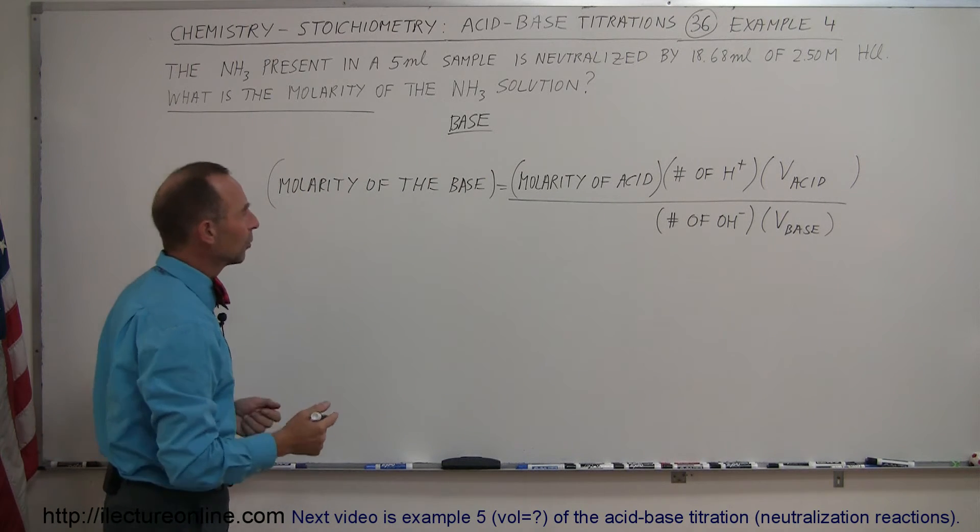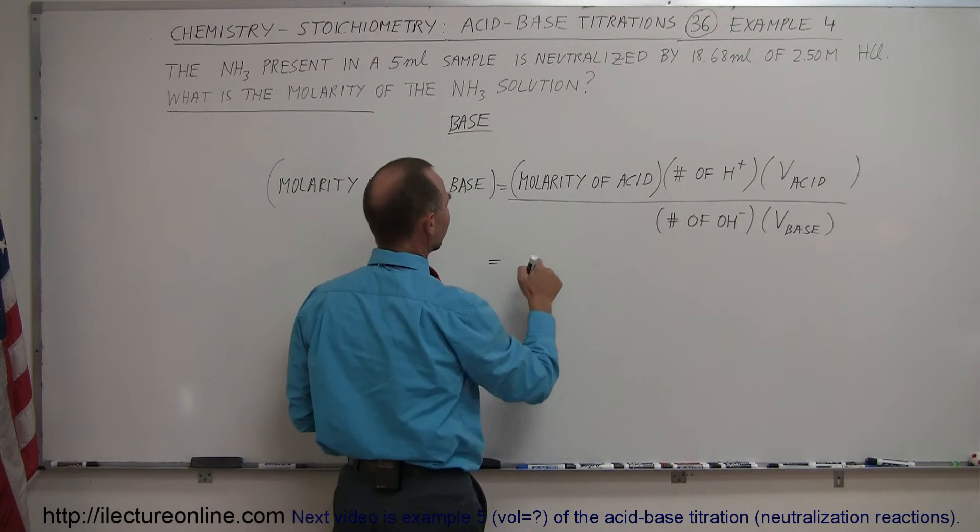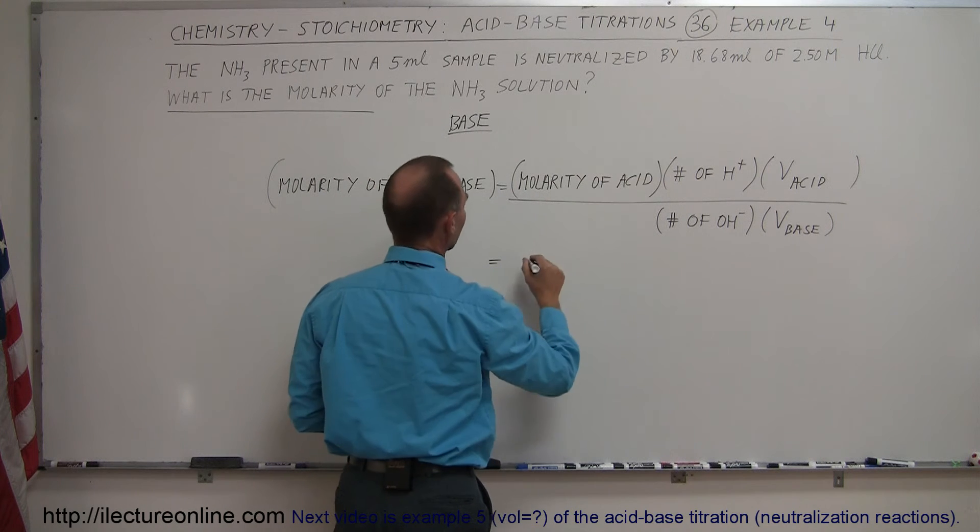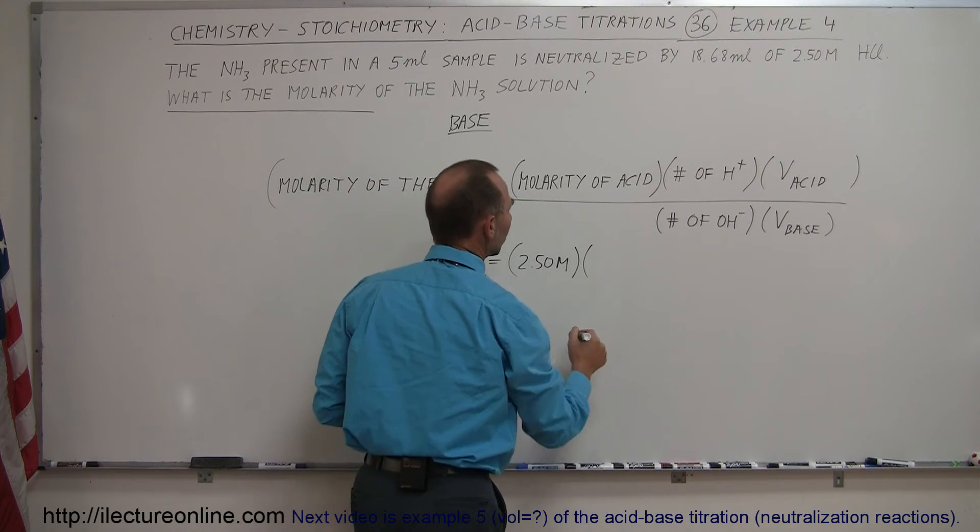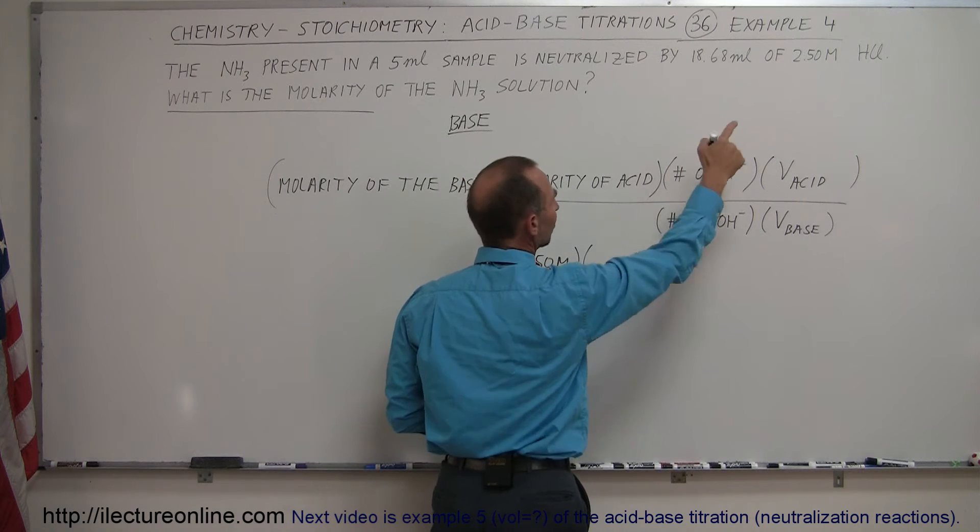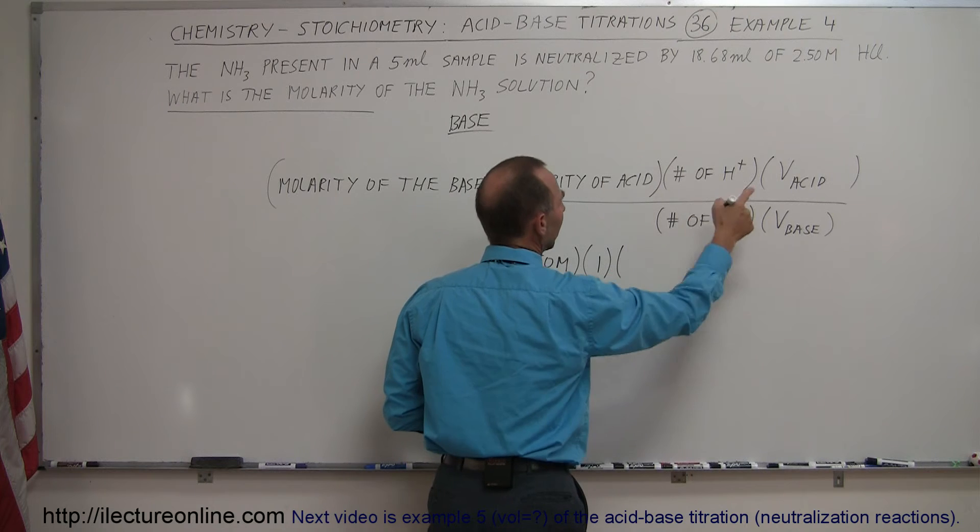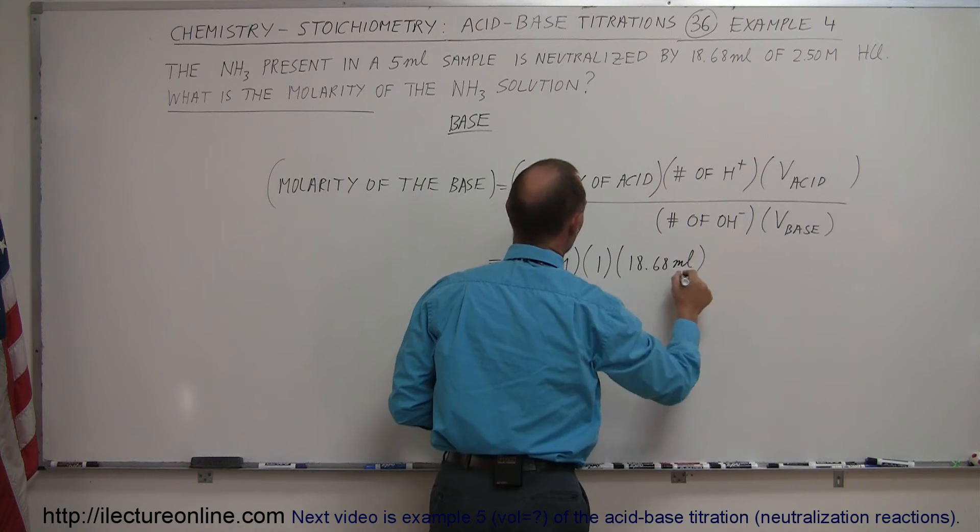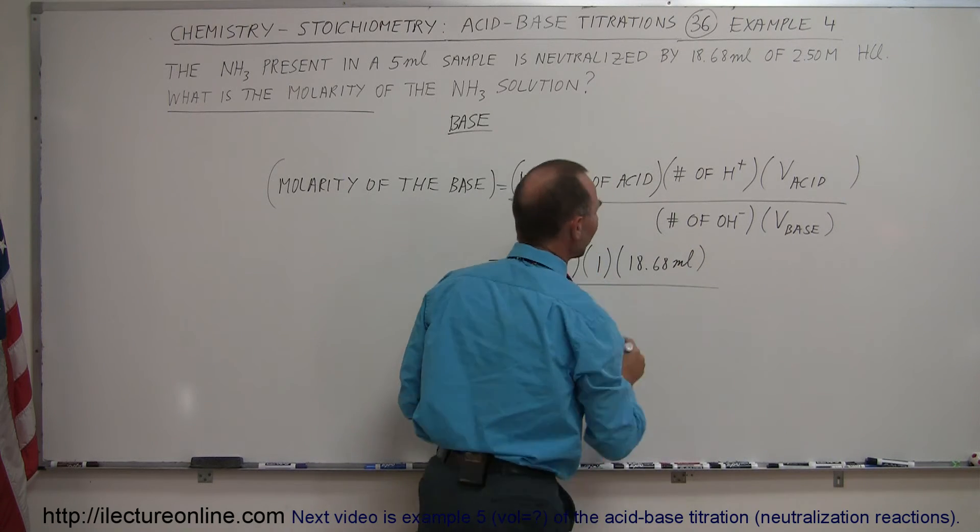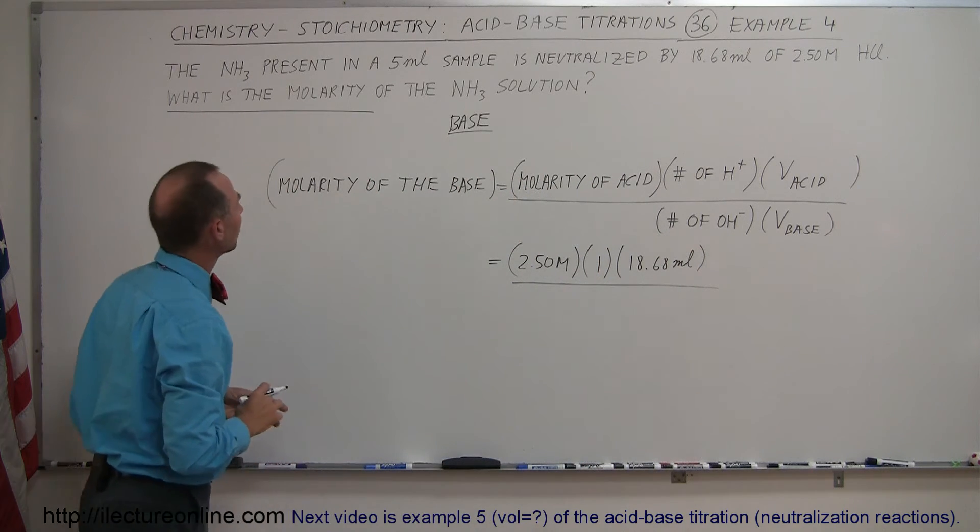Now all we have to do is plug in the numbers and we should be on our way to solving that. So the molarity of the acid was given to us as 2.50 moles per liter of the solution. The number of hydrogen ions produces 1 per molecule and the volume was 18.68 milliliters divided by the number of hydroxide ions produced. And you look at ammonia.